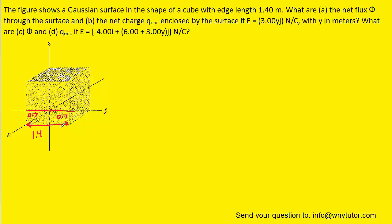There are two surfaces that the electric field will pierce, so we need two expressions for electric flux. The first surface is the left face of the cube, which has a y-coordinate of negative 0.7, since we assign the positive y-direction to the right and negative y-direction to the left.